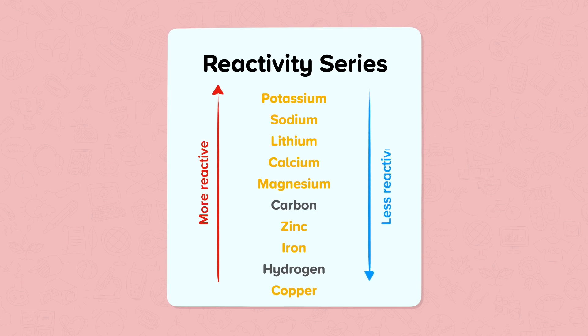So potassium on this list is the most reactive. The non-metals carbon and hydrogen are included in the reactivity series because these elements have a relative reactivity compared to other metals, so it is a useful reference to compare metals against. This list can help us predict if a chemical reaction will take place.